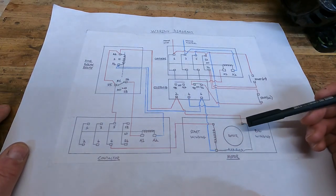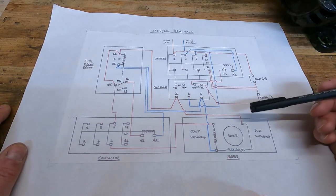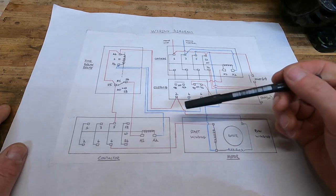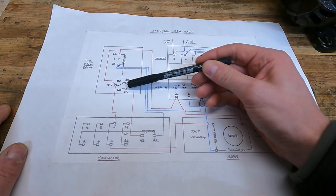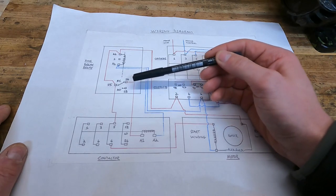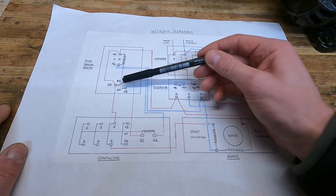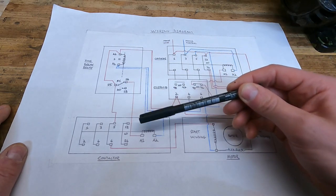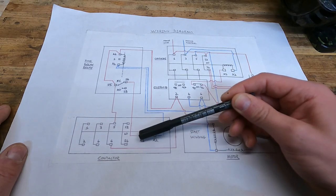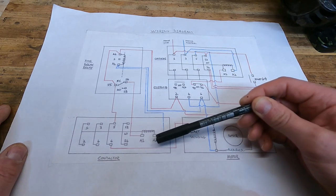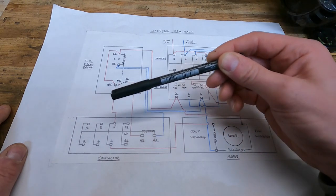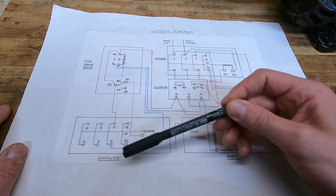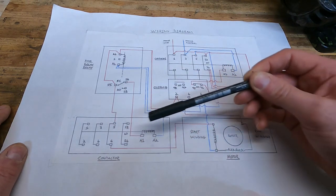So the way we're going to get around that is, instead of the start winding load going through the contacts on the time delay relay like we had before, the time delay relay is going to switch on and off another coil in another contactor. Then that contactor will actually switch the load of the start winding, and that contactor will have a higher spec that's designed for switching these sorts of inductive loads.